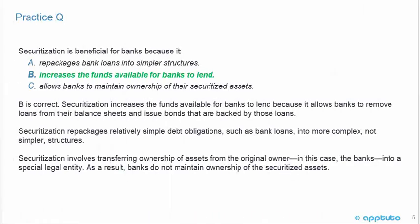The correct answer is B — securitization is beneficial for banks because it increases the funds available for banks to lend. Securitization allows banks to remove loans from their balance sheet and issue bonds backed by those loans. Option A is wrong because securitization repackages relatively simple debt obligations, such as bank loans, into more complex, not simpler, structures. Option C is wrong because securitization involves transferring ownership of assets from the original owner into a special legal entity, so banks do not maintain ownership of the securitized assets.